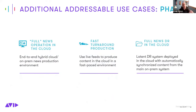Building on the Phase 1 use cases, Phase 2 will support a full news operation including studio capabilities connecting back to the on-premises system, fast turnaround production in a live news environment, and — as Regis mentioned — a really important element customers are talking to us about right now: backup systems. This will enable a full news disaster recovery system running in the cloud. These are just some of the use cases, building on and enhancing the workflows currently available, with much more to come.